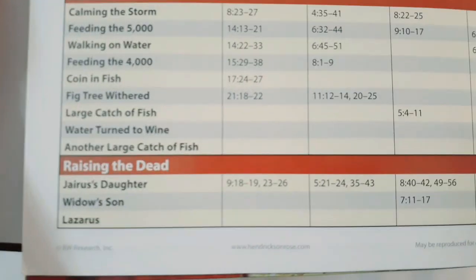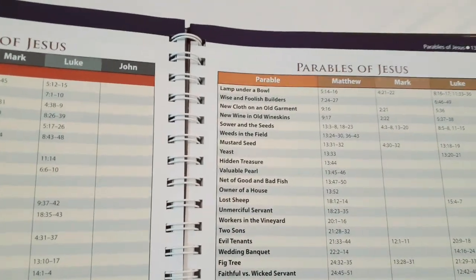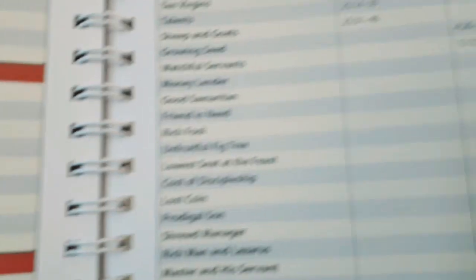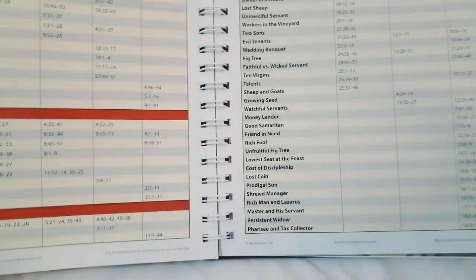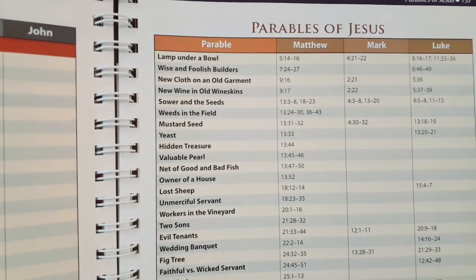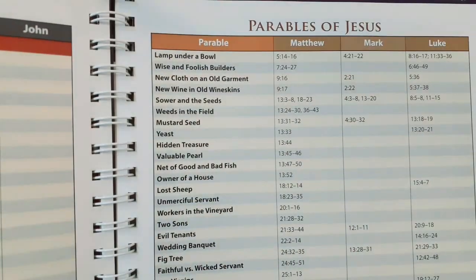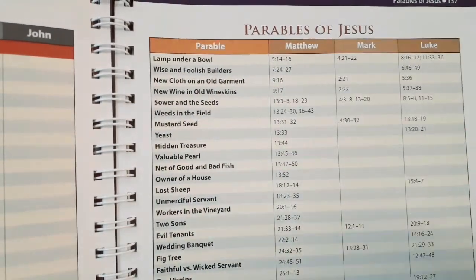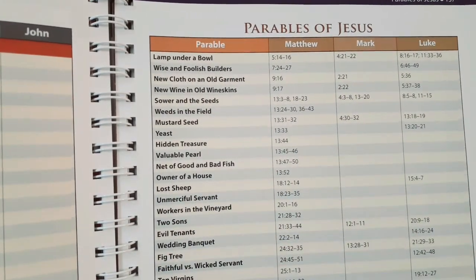He talks about raising the dead — Jairus's daughter, the widow's son, and Lazarus. Then he talks about all the parables of Jesus. Personally, I don't consider the rich man and Lazarus a parable — it sounds like an actual recorded event. But for the sake of convenience, Rose Publishing has bunched up all the parables together. It's a good reference for Bible study, homeschooling, small groups, and preaching. Then it talks about the Beatitudes — blessed are the poor, all the way to blessed are those persecuted for righteousness.